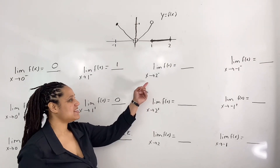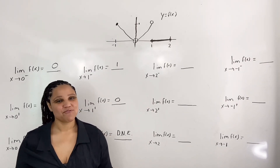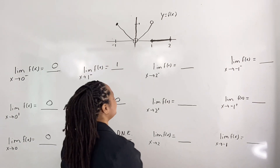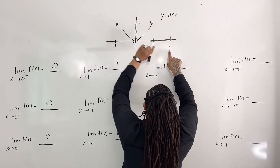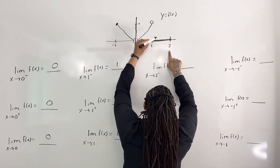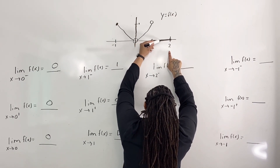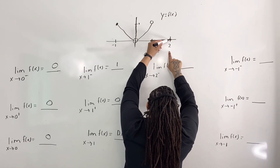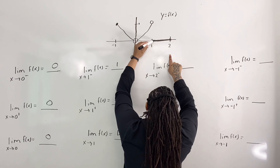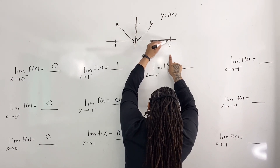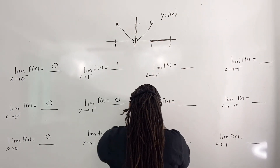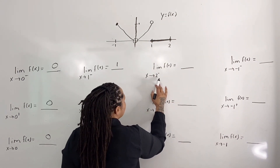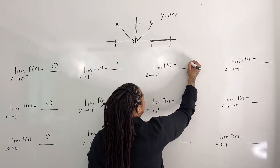Next we evaluate the limit as x approaches 2 from the left. I will place one hand by x equals 2 and the other hand to the left of x equals 2. I then travel the graph until my hand is almost in vertical alignment with the first hand. We see that as x approaches 2 from the left, the y value approaches 0. So the limit as x approaches 2 from the left is 0.